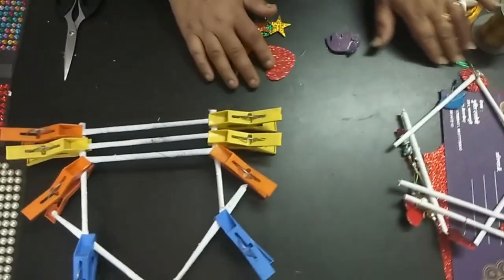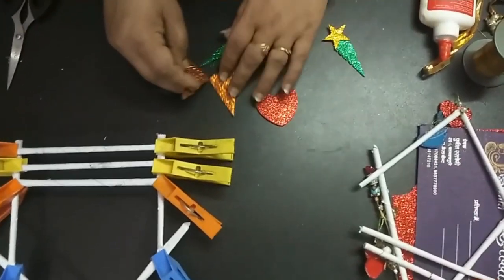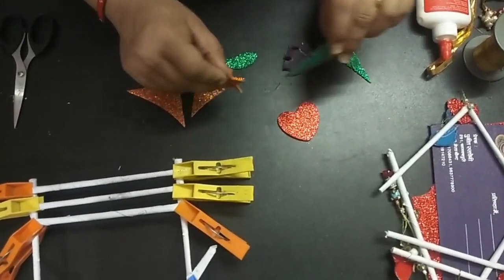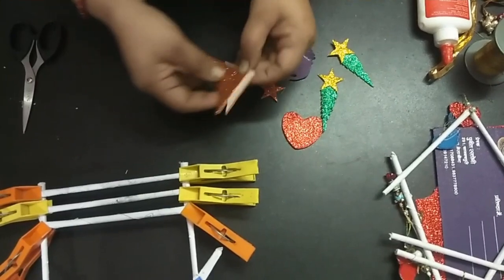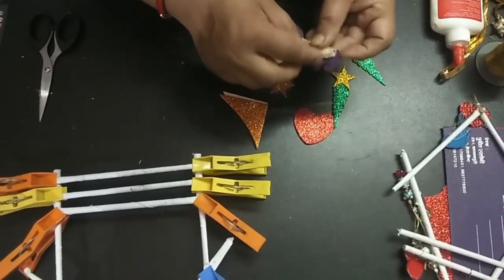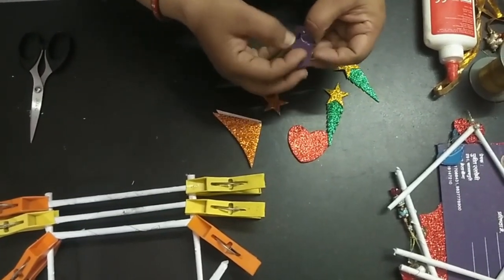I've already cut out some shapes. You also can do this with glitter paper or some colored paper. Any shape like heart shape, stars—cut it out. These are from an invitation card. I just made a roll of masking tape. Now I'm going